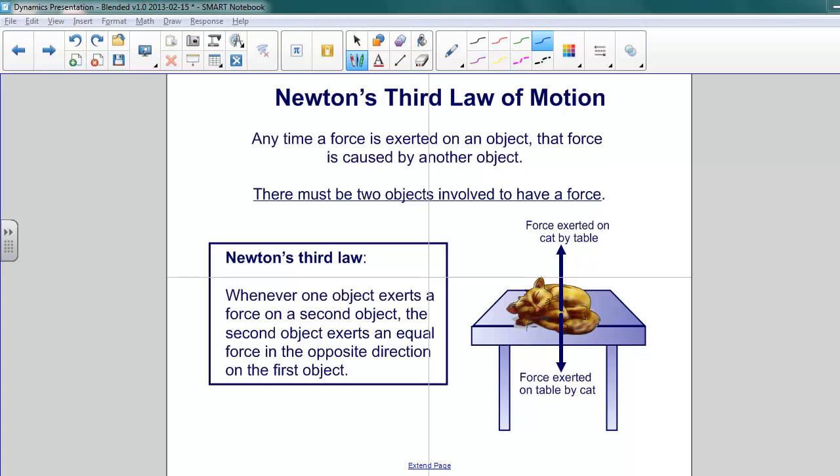Newton's Third Law states: whenever one object exerts a force on a second object, the second object exerts an equal force in the opposite direction on the first object. So if you imagine our cat lying here on the table, the cat exerts a force onto the table in a downward direction, and the table exerts an equal force on the cat in an upward direction. They are equal and opposite.